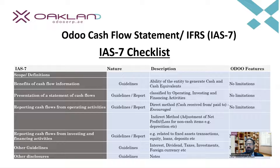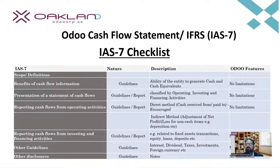Next is reporting cash flows from operating activities. In IAS 7, two main methods are given: the direct method and the indirect method. The direct method presents operating cash flows with cash received and cash paid as line items — for example, cash received from customers and cash paid to suppliers. In the indirect method, there are no such direct line items; it starts with net profit or loss, then makes adjustments for non-cash items like depreciation, to arrive at the net cash inflow or outflow.